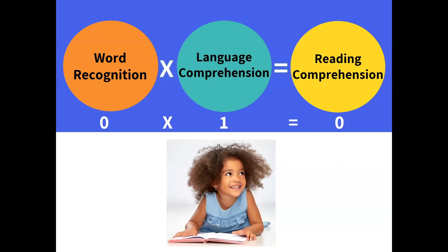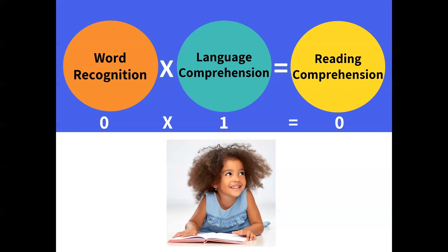Now let's take a look at this student — an English language learner just starting to learn English. This child was already reading in his native language of Spanish, so he was able to apply some of those skills to decode some words. Let's pretend he can completely decode a sentence because many of those sounds transferred from Spanish, and he understands what reading is — but he was not able to comprehend any of the language he decoded. We would still have a zero in reading comprehension, because even if you can decode the language, if you don't understand the vocabulary, you will not be able to comprehend what you read.